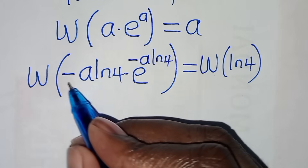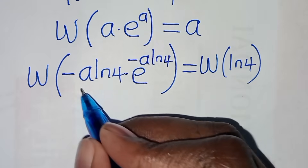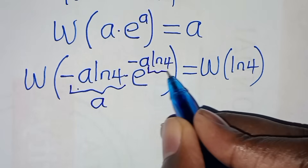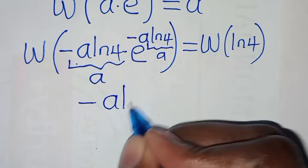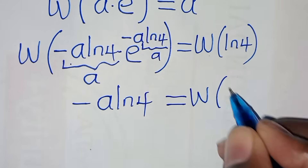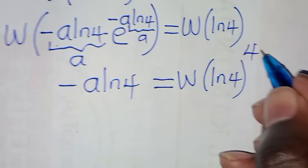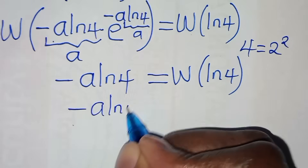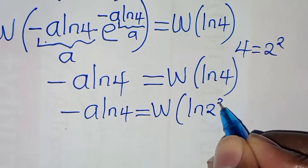Applying the Lambert W function to both sides, we get: the W function applied to minus a ln 4 times e to the power of minus a ln 4, equals the W function of ln 4. We can express ln 4 as ln of 2 squared, so this becomes W of ln 2 squared.